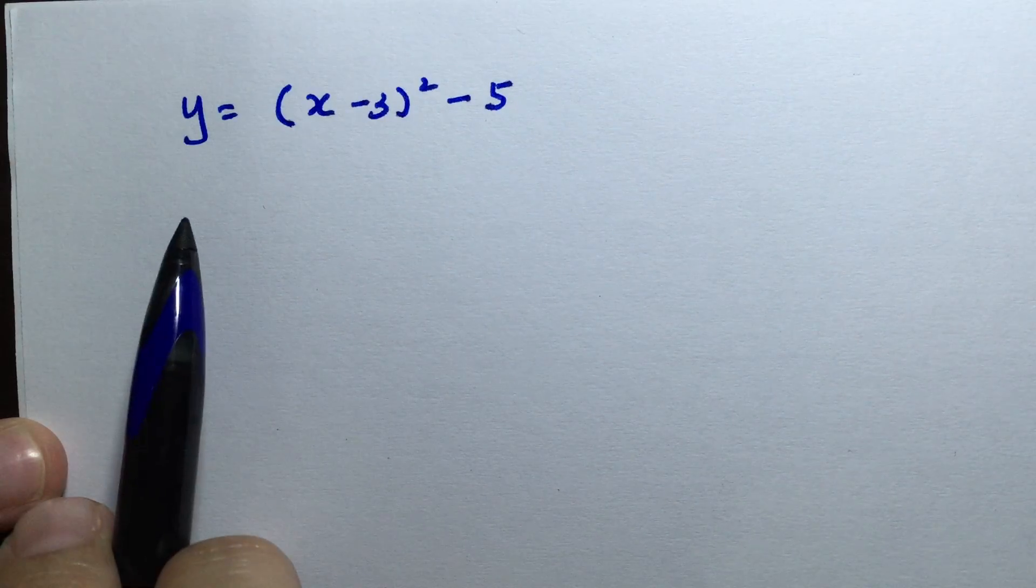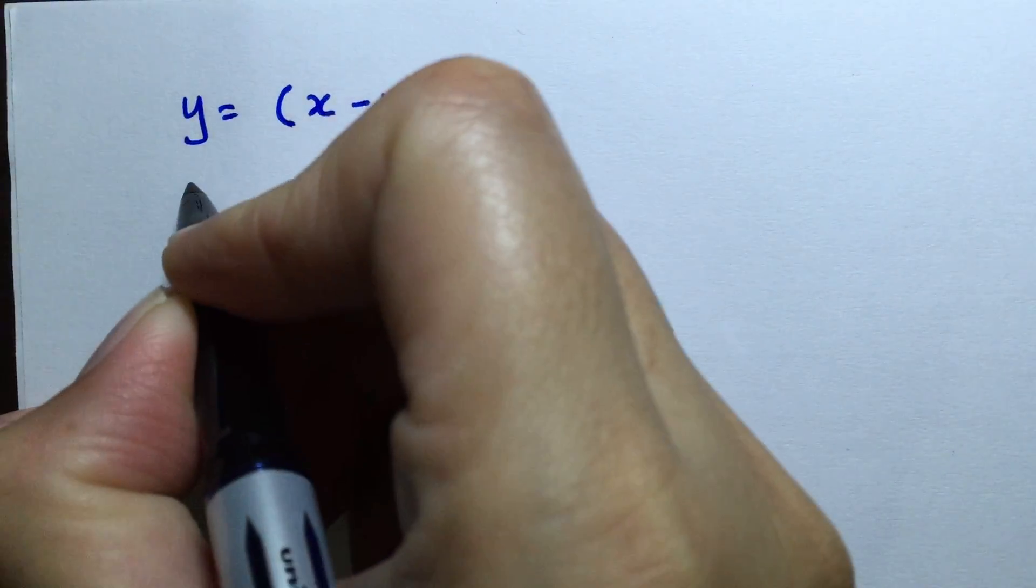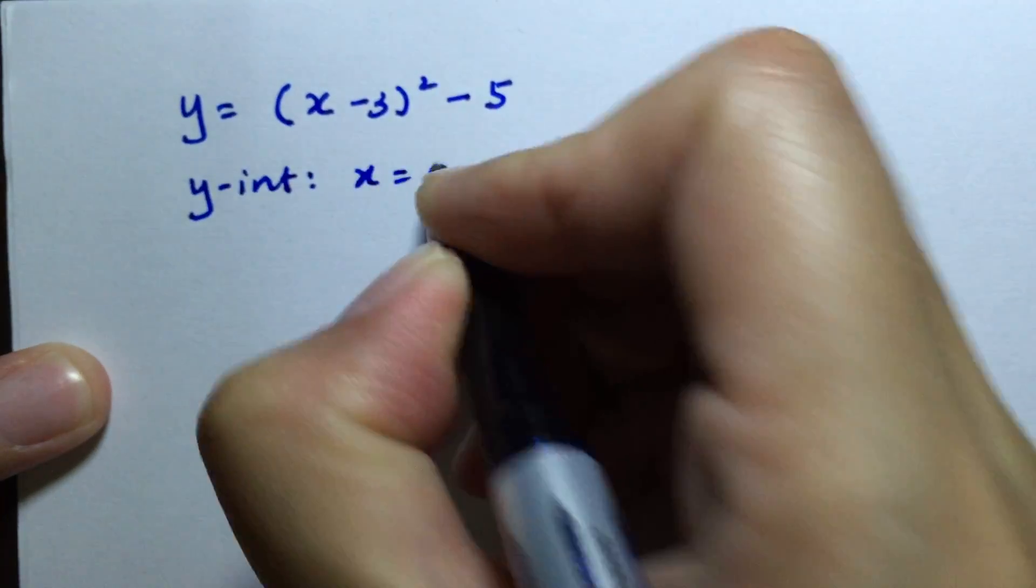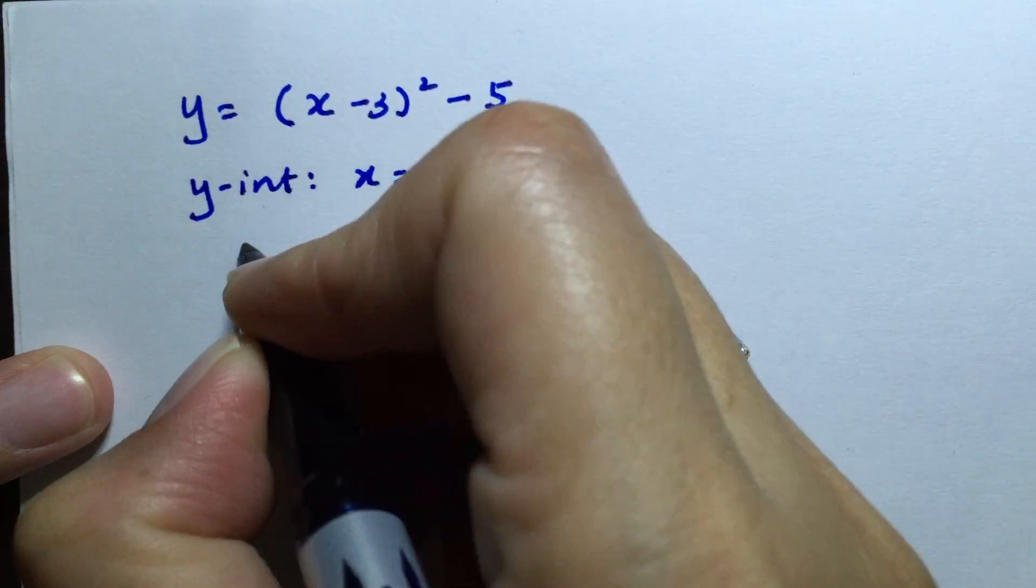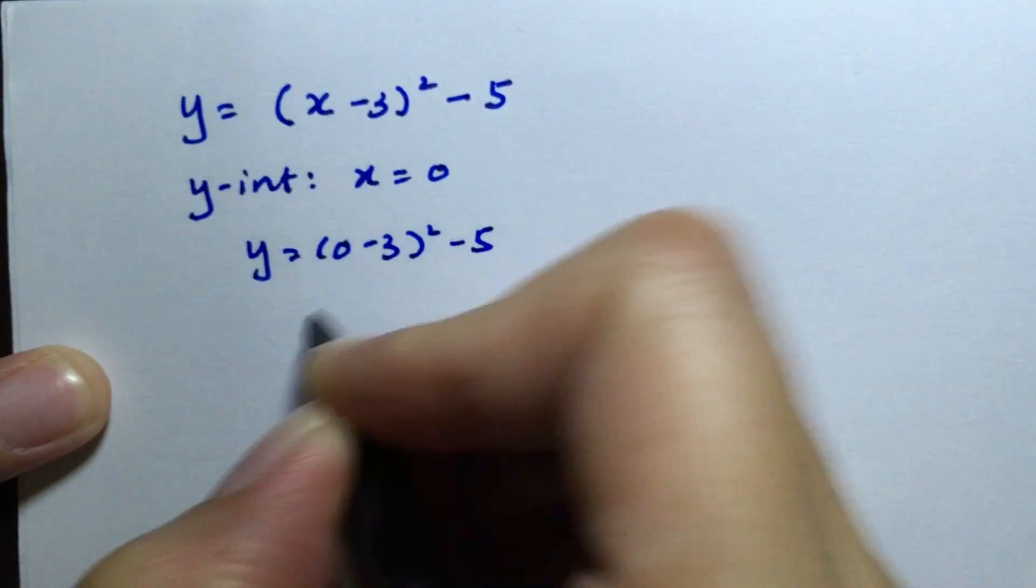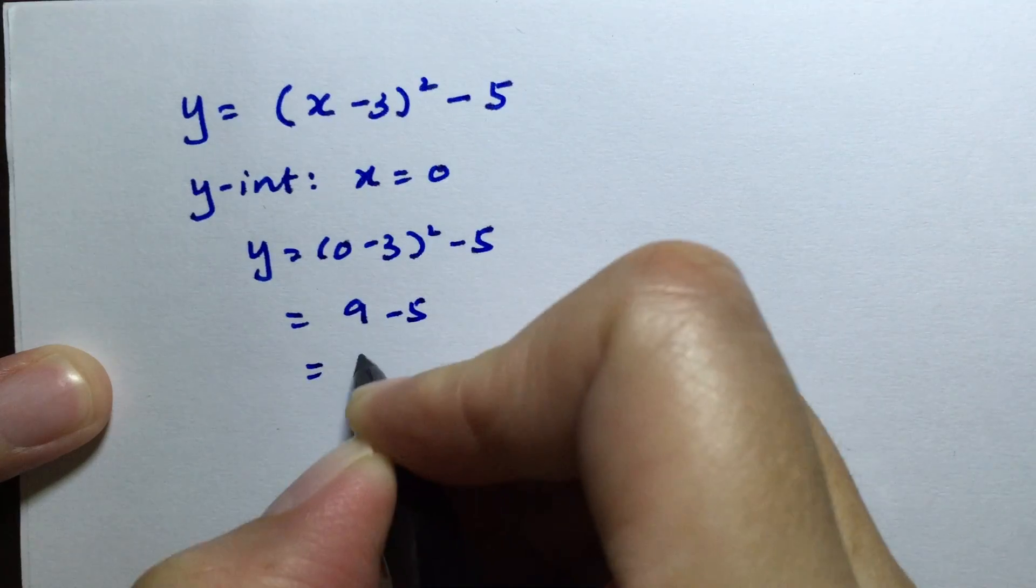First is the y-intercept. When x equals 0, we have y = (0-3)² - 5, which gives us 9 - 5 = 4.